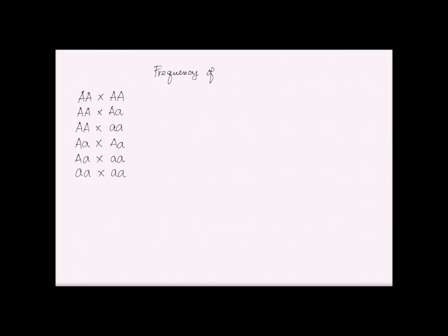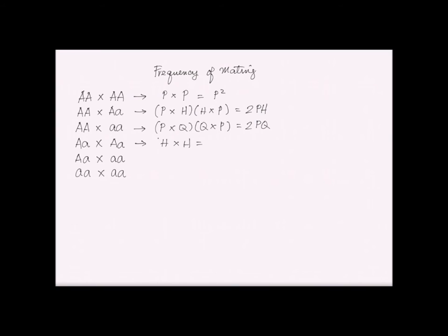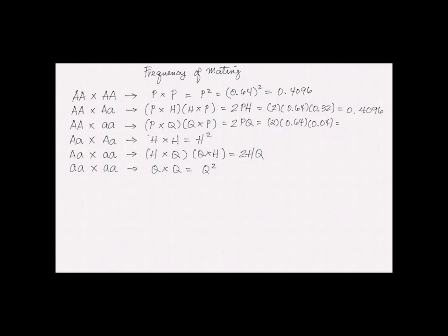With a population consisting of three genotypes, there are six possible types of mating. For mating of two homozygous dominant organisms, there is only one way — a dominant female and a dominant male — so the frequency of mating is p squared. For homozygous dominant and heterozygous mating, it can go two ways, so the frequency is p times H multiplied by H times p. The others follow the same pattern, and the frequencies can be calculated by substituting p, H, and Q with values. All mating frequencies should total to one.